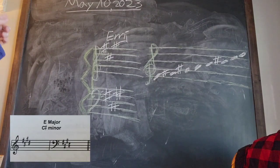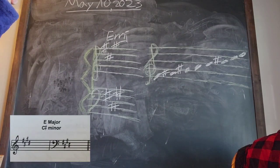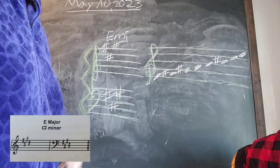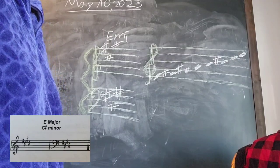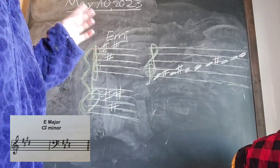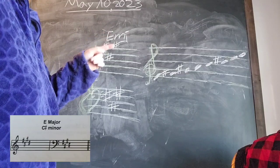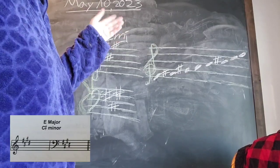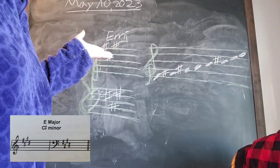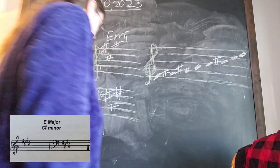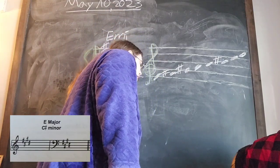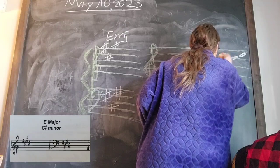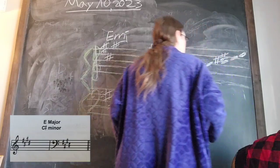Again, the last sharp of the scale, of the key, is your seventh degree of the scale. So if we look at this scale of E major, we look at the seventh degree and we see, oh that's D. All we have to do is just plop a sharp in front of that D right here and we have the correct sounding scale.